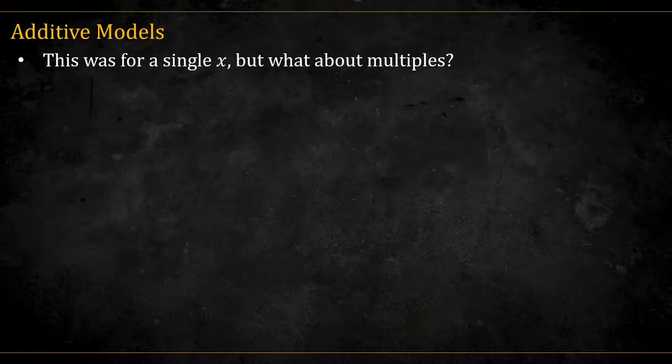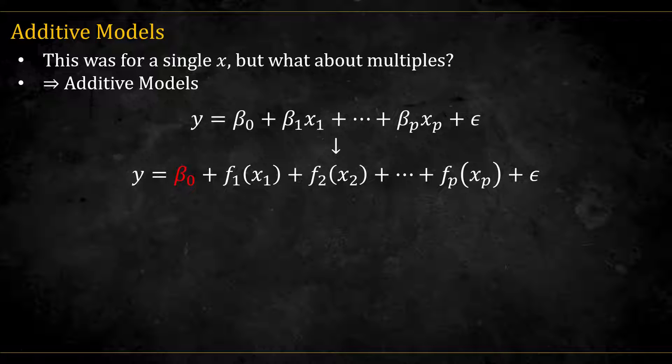Now, this was for a single x-predictor, what about multiples? For this we have additive models. We move from linear terms to these smooth functions. We usually write the intercept outside, and suppose all the f functions have zero intercept. This is done to avoid identifiability issues. If we haven't done that, we could always add a number to f1 and then subtract it from f2, for example.